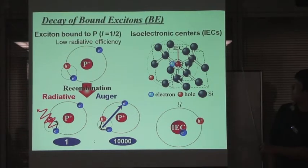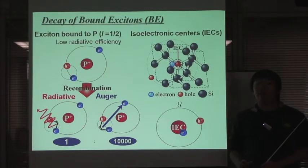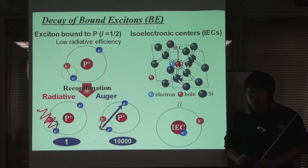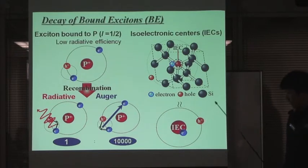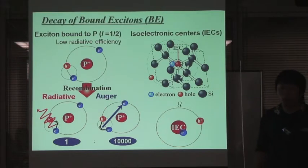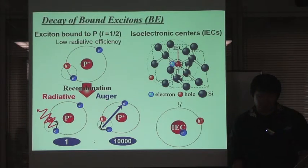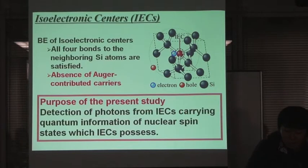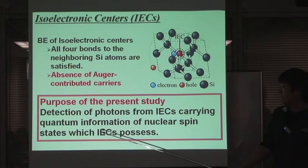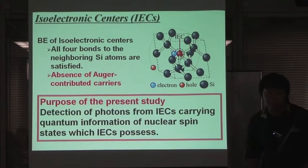Therefore, we focus on isoelectronic centers. Isoelectronic centers have the same number of valence electrons as the host atoms. So there is no Auger-contributing carrier, as shown in this figure, and the Auger process cannot occur. So the isoelectronic centers have a higher radiative efficiency than that of not only phosphorus, but also usual donors and acceptors. So we research the optical properties of isoelectronic centers for detection of photons carrying quantum information of nuclear spin states, which isoelectronic centers have.